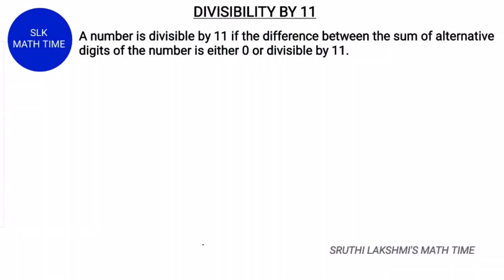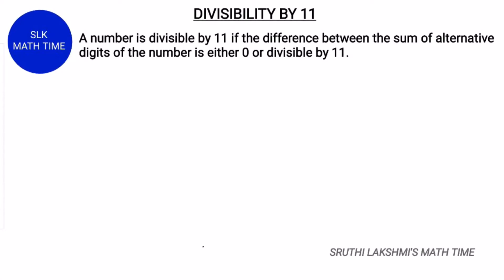Hi! Welcome to Shruti Lakshmi's virtual classroom. Today we are going to see the divisibility rule for 11. A number is divisible by 11 if the difference between the sum of alternative digits of the number is either 0 or divisible by 11.